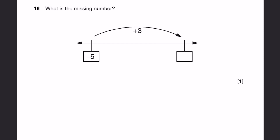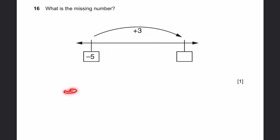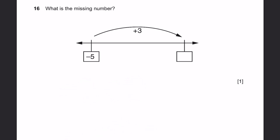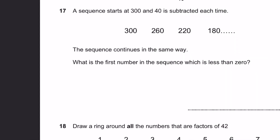Question 16. What is the missing number? Minus 5 — we add 3 to it. Minus 5 plus 3 equals minus 2. That's the answer.